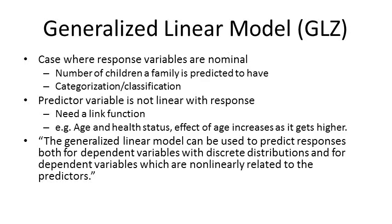On top of that, the GLZ allows predictor variables that are not linearly related to the response, and in those cases you need a link function. An example is age and health status — if health status is nominal like healthy, not healthy, or normal, then as you age, the effect of age on health status increases much more at higher ages than lower ages. The difference between a 25-year-old and a 30-year-old in the response variable is not the same as between a 50-year-old and a 55-year-old. In summary, GLZ can predict responses for dependent variables with discrete distributions and for variables non-linearly related to the predictors.